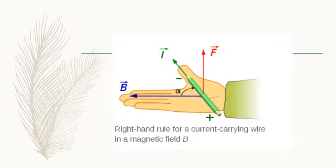The Lorentz force direction is given by the right-hand rule. If you stretch your right-hand palm and the direction of magnetic field is given by your fingers, and the direction of current flowing in the wire is given by your right-hand thumb, then the force exerts perpendicular to your palm. It is a very simple and convenient law to know the direction of the force, and we use it everywhere.